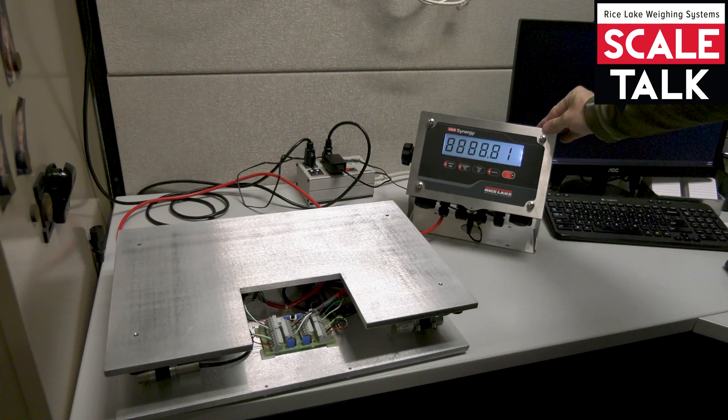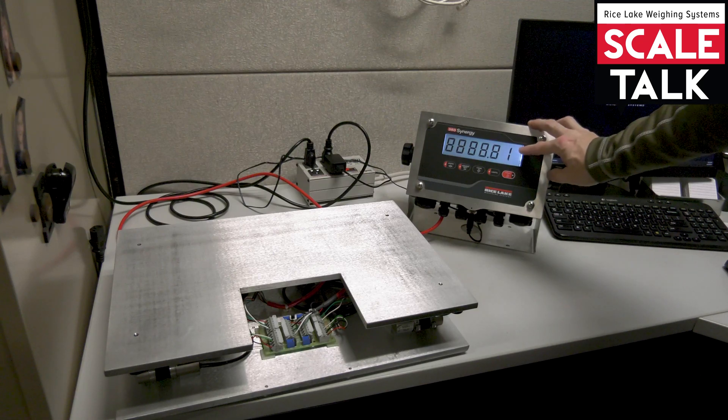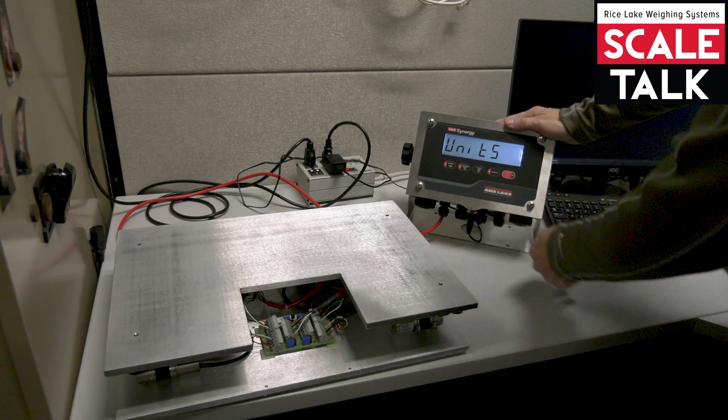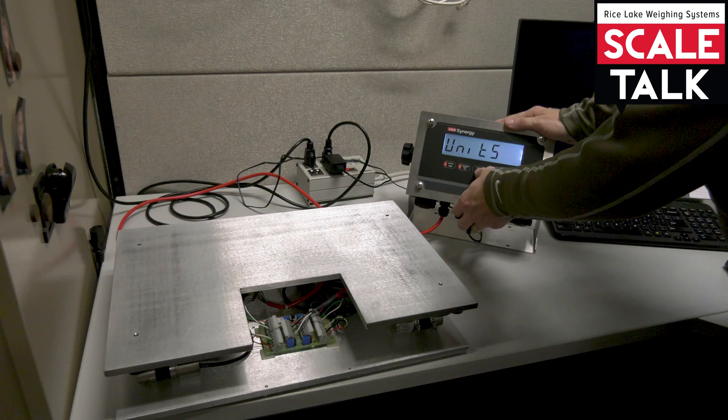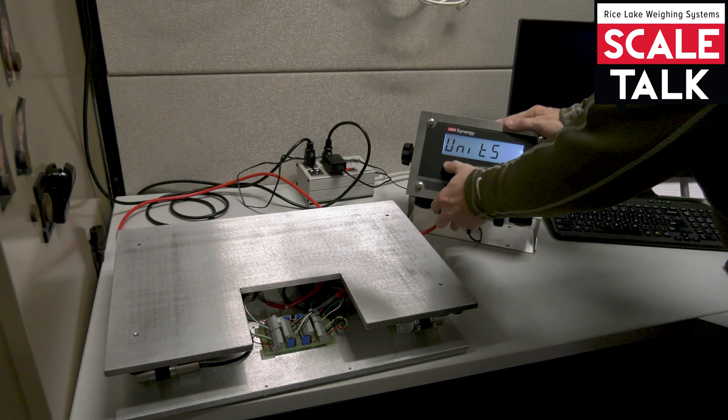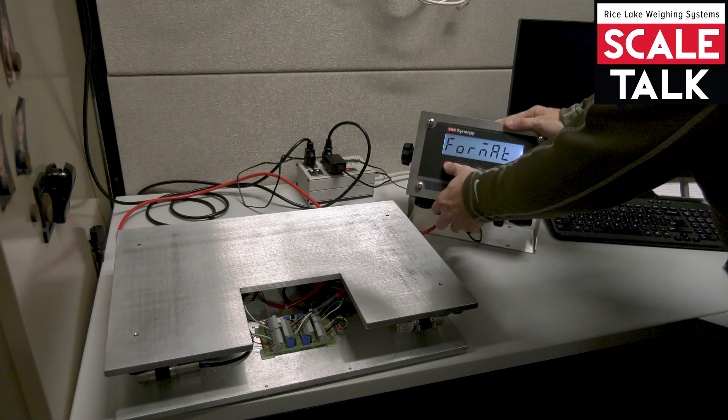There we go. Now my scale should read as a 50 pound scale counting by 0.01. I'll hit tear to accept this. My primary units by default is going to be pounds, so I won't need to change that. I'm going to go up until I get back to format.